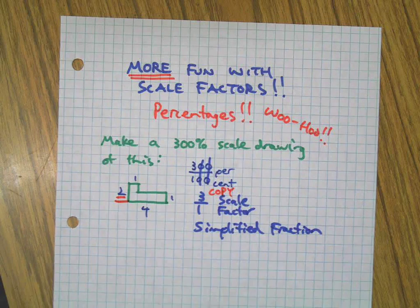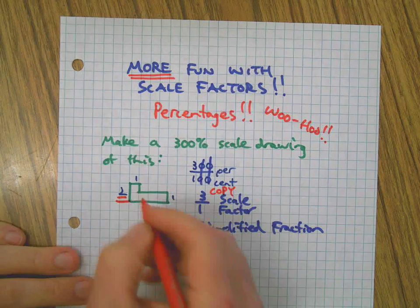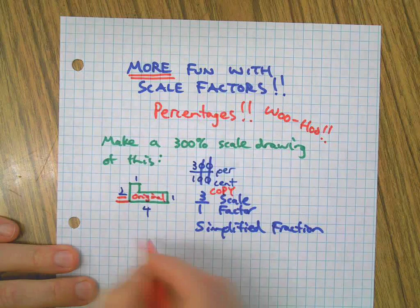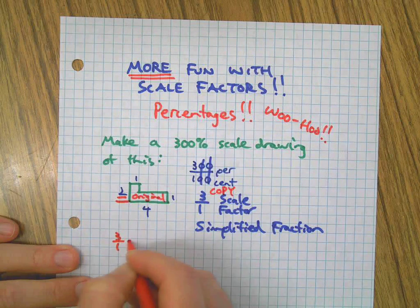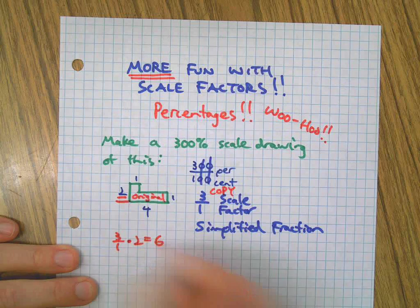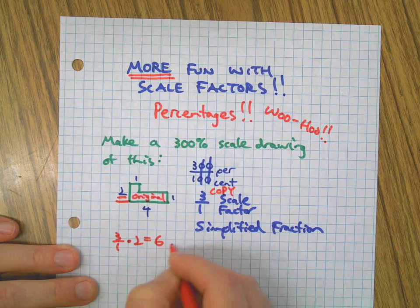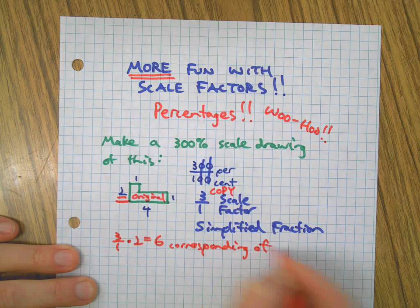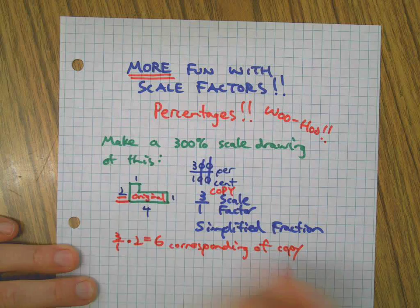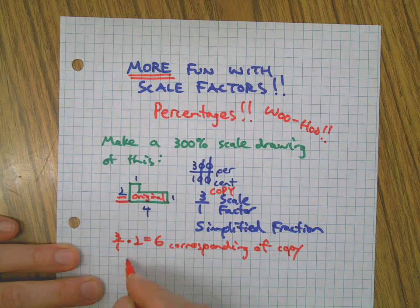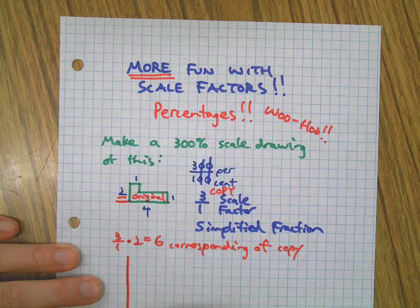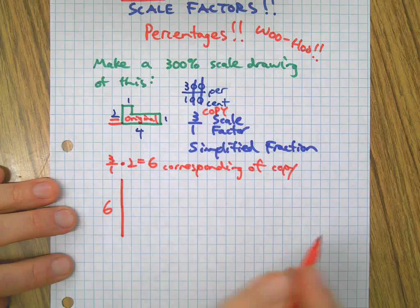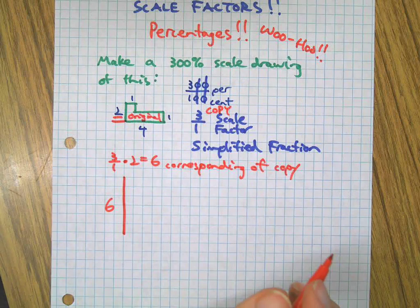So if I take one side of the original, that's this one, and I want to make the copy, I'm going to take the scale factor times the side, gives me that same corresponding side or the matching side of the copy. So instead of two, I'm going to have a six here.